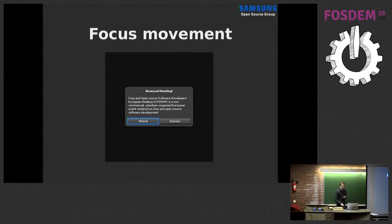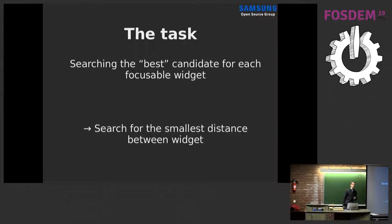So the task in EFL that we are trying to solve with graphs is actually we try to find the best candidate for each focusable widget on the UI. The first approach for solving this could be we just take the set of vertices and say this is just our focusable widgets. Then we search the smallest distance between the widgets. This small idea is good for forming the problem. However, there are a few problems.